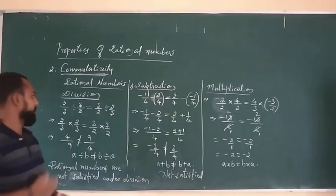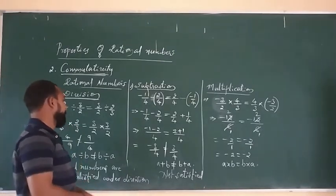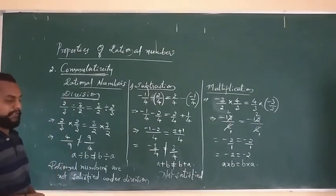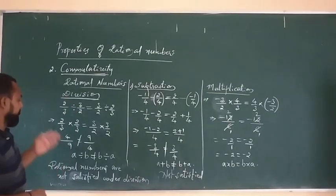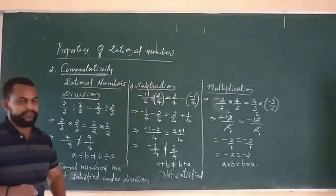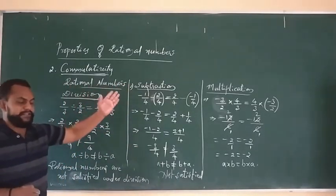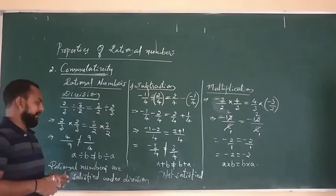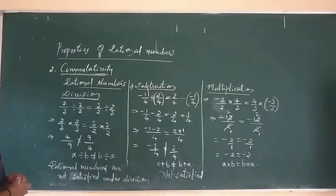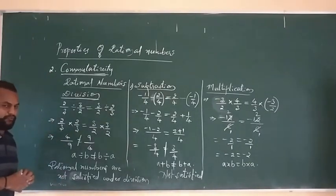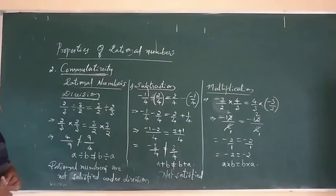Summary: the rational numbers are satisfied under addition and multiplication, but not under subtraction and division. Tomorrow we will discuss about the next concept — the third property, which is the associative property.